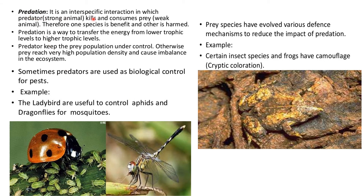Predation is an interspecific interaction in which the predator (the stronger animal) kills and consumes the prey (the weaker animal). One species benefits and the other is harmed — for example, a tiger eats a deer. Predation always transfers energy from a lower trophic level to a higher trophic level. Predators keep prey populations under control; otherwise prey reaches very high density and causes imbalance in the ecosystem. Sometimes predators are used as biological control for pests — for example ladybirds are used to control aphids, and dragonflies to control mosquitoes.